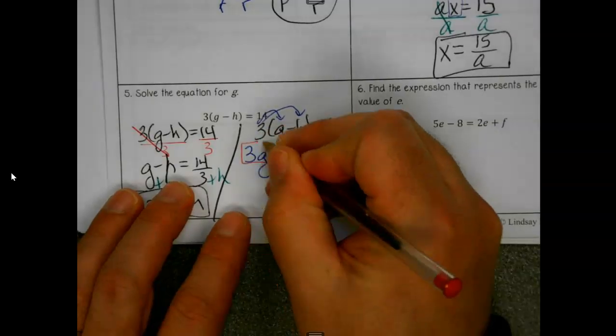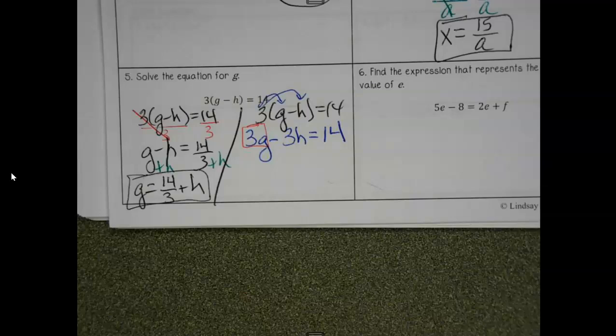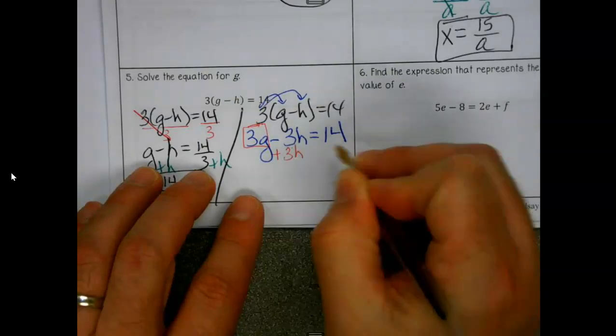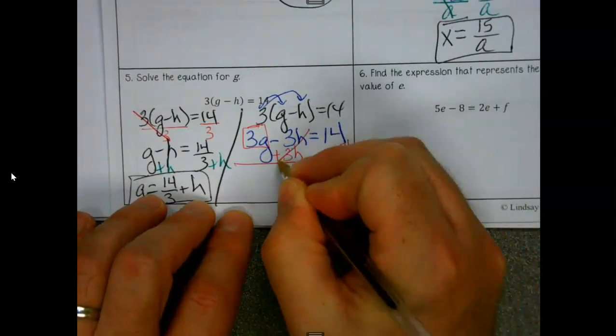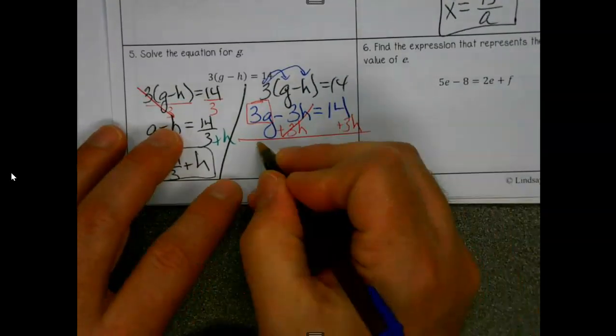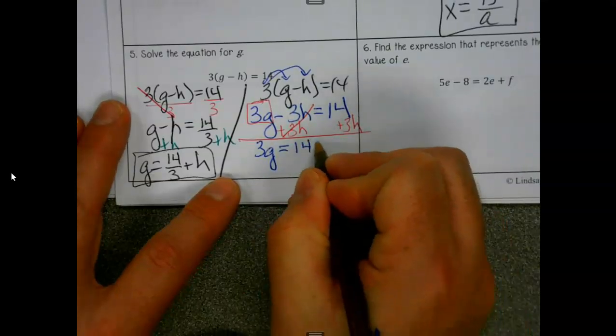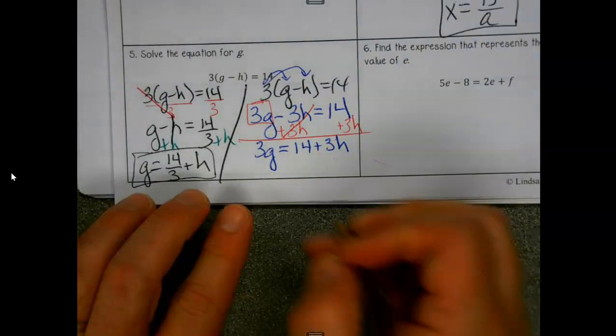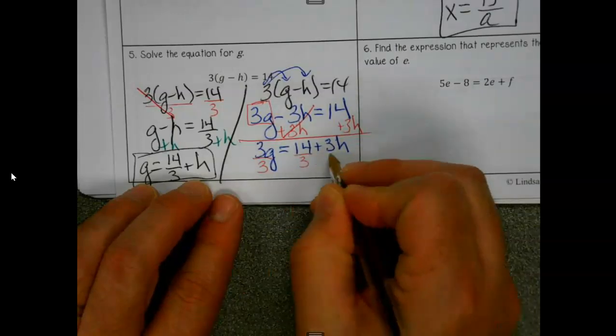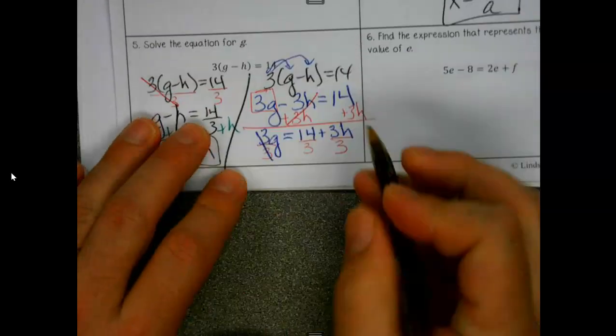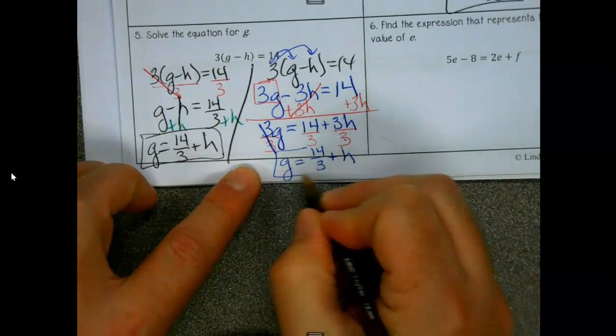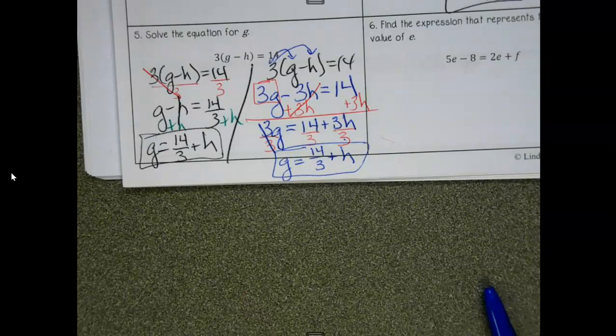Okay, let's see if we end up in the same place. So if we distribute the three first. Let's see, we're solving for g. What would be next? That's gonna be my last step - how do I get this out of there? Okay, we'll opposite there. Nope, we cannot combine those, you're right. And 3 divided by 3 is 1.